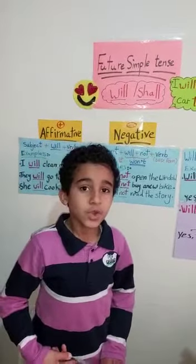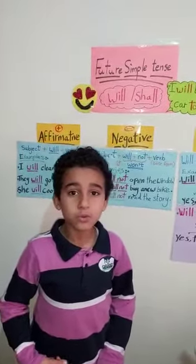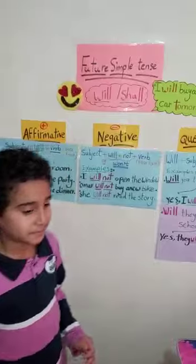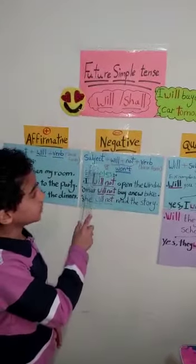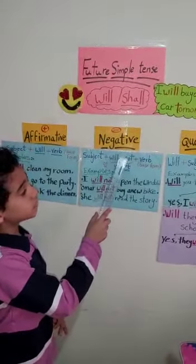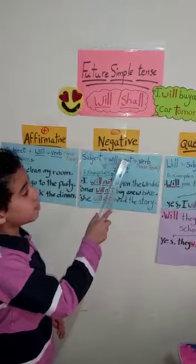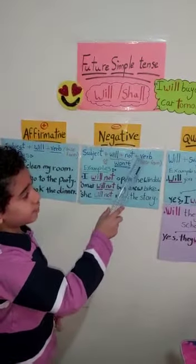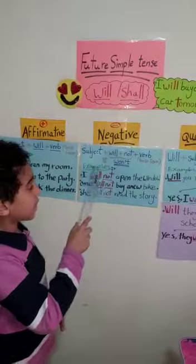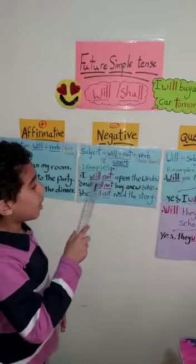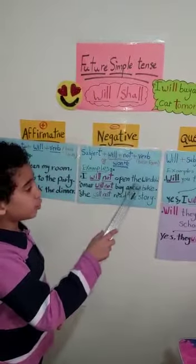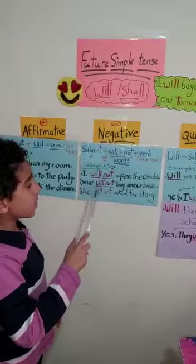Now we will talk about the negative form: subject, then 'will', then 'not' after will — or 'won't' — then the verb in the base form. For example: 'I will not open the window.' 'Omar will not buy a new bike.'